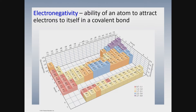If the electronegativity is zero, that means that atom has no attraction whatsoever for a shared pair of electrons in a bond. On the other end, if you have an atom with an electronegativity score of 4.0 — the highest score you can have — then it has the strongest attraction for a shared pair of electrons in the bond.